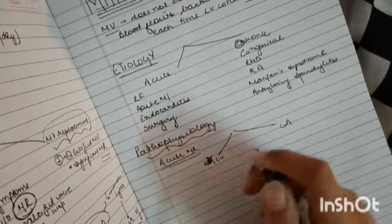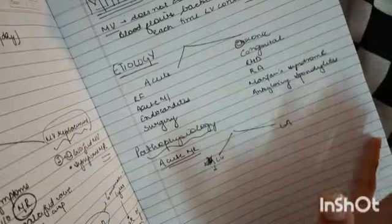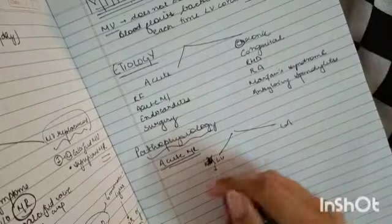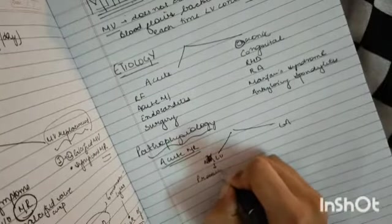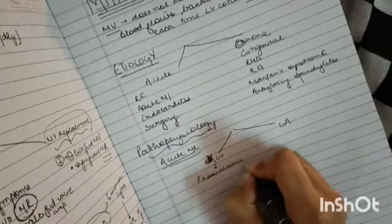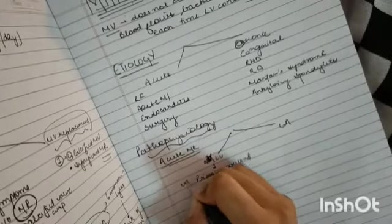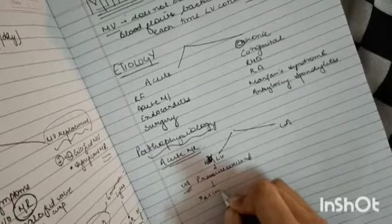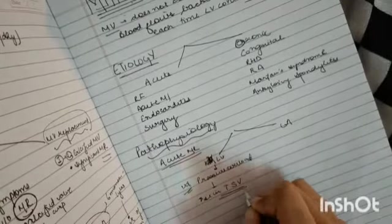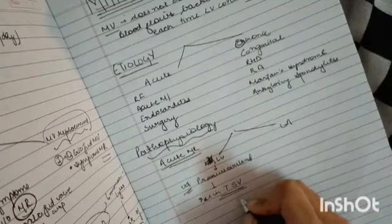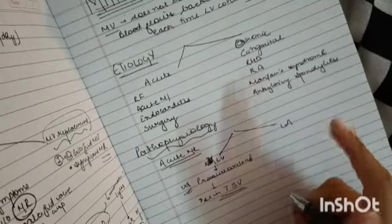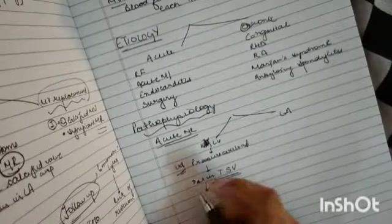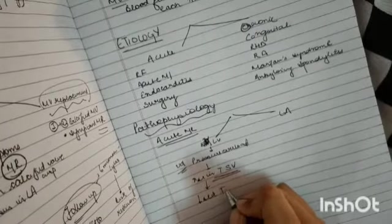In left ventricle, since it is pumping the blood and contracting, there is a pressure overload or volume overload. Then we see there is an increase in the total stroke volume because basically it is forward stroke volume plus regurgitation volume. Then there is a decrease in the forward stroke volume because blood is not being pumped in the forward direction.